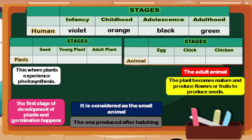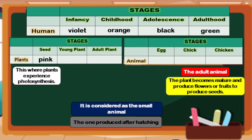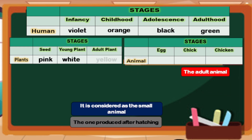For table 2, about plants: for seed, the characteristic is color pink — it is the first stage of plant development and germination happens. Next, for young plant, is color white — plants experience photosynthesis to become an adult plant. And the last, for adult plant, the answer is color yellow — the plant becomes mature and produces flowers or fruits to produce seeds.